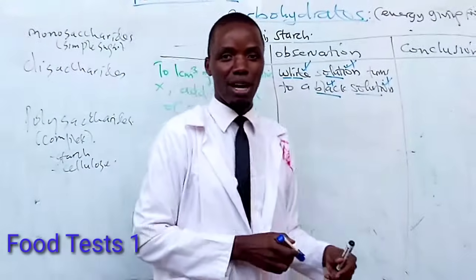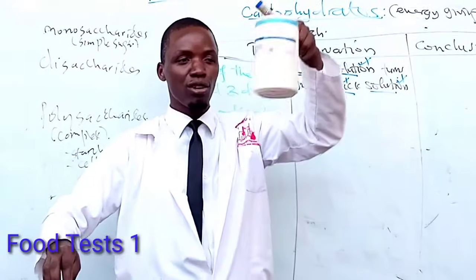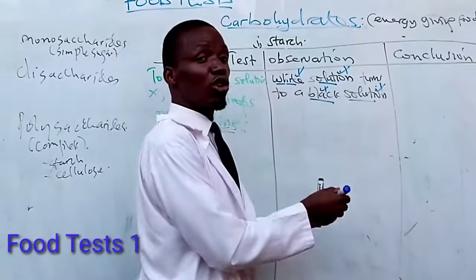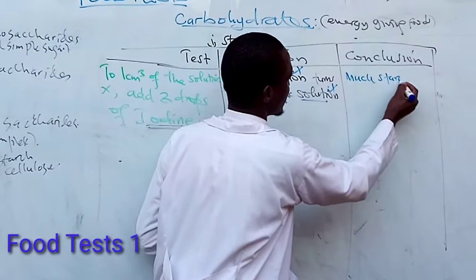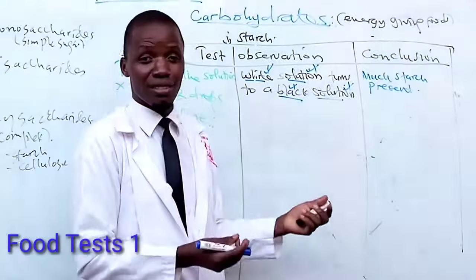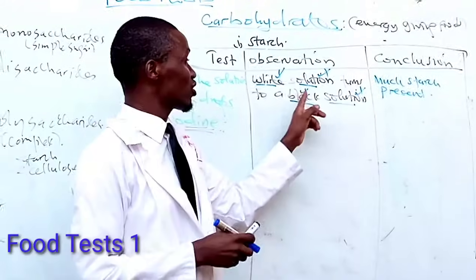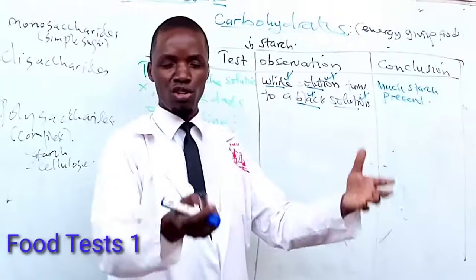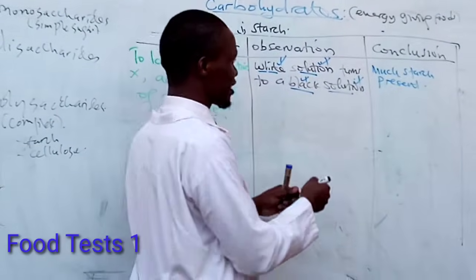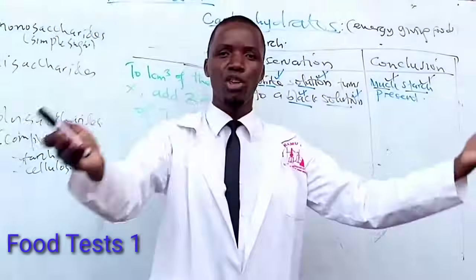Based on this observation, my conclusion is that starch is present — much starch is present. You can use present simple tense: 'a white solution turns into a black solution, starch is present.' Or you can use past tense: 'a white solution turned into a black solution.' Either tense is acceptable. Mentioning 'match' and identifying the food substance — starch — will get you the marks.